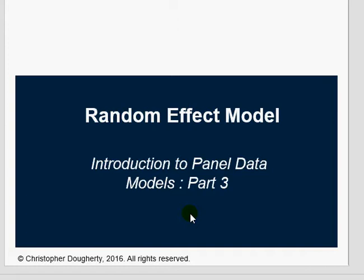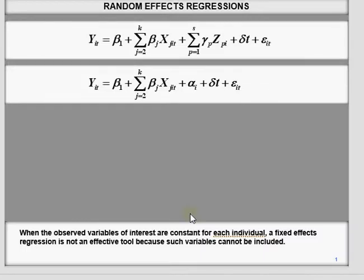In my previous video, I discussed fixed effect models. In this video, I am going to discuss the random effect model, and when we should use random effect versus fixed effect model. When the observed variables of interest are constant for each individual, a fixed effect regression is not effective because such variables cannot be included. For example, if you are talking about the schooling effect for people who have completed their schooling and you monitor them for two, three, or four time periods, their schooling will remain the same. So the schooling effect will not change for those individuals over the next five years — that effect will be eliminated.